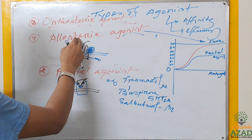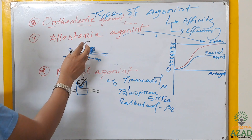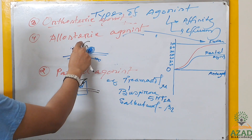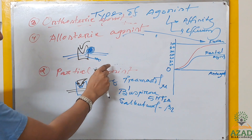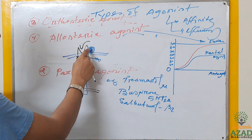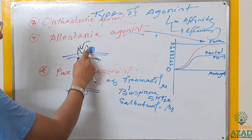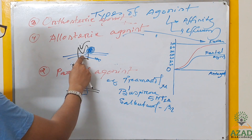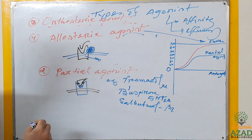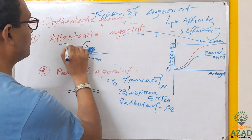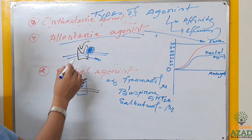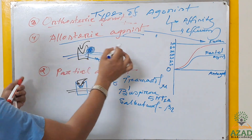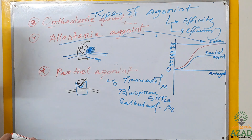The allosteric ligand binds with the allosteric site — other than the main binding site — and is able to change the conformation of the receptor independently, whether or not the endogenous ligand is present. It does not change the activity of the ligand; it changes the activity of the receptor directly. That is why it is called an agonist.